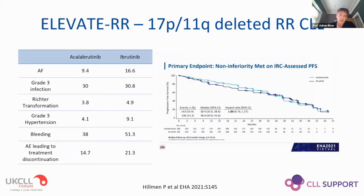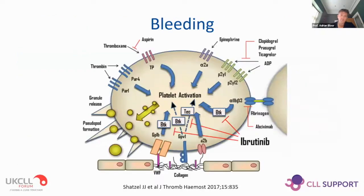This is borne out by published data - the ELEVATE-RR trial, a direct comparison of ibrutinib and acalabrutinib in relapsed/refractory CLL for high-risk patients. As already noted, efficacy was the same. But for adverse events of special interest, there is a lower rate of atrial fibrillation, hypertension, and bleeding in patients treated with acalabrutinib compared with ibrutinib, some of which is due to its greater specificity for the BTK target.